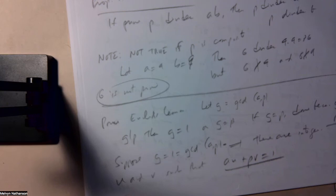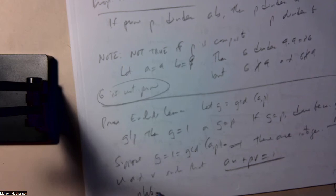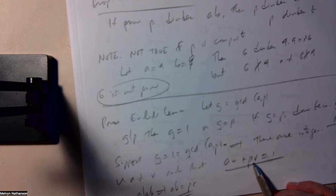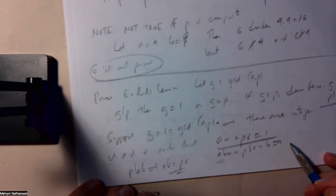But what was our hypothesis? Our hypothesis is that p divides ab. So ab is p times c for some integer c. So ab u plus pv equals b. Multiply by b. But for ab I can substitute pc. So pc u plus pb v equals b.